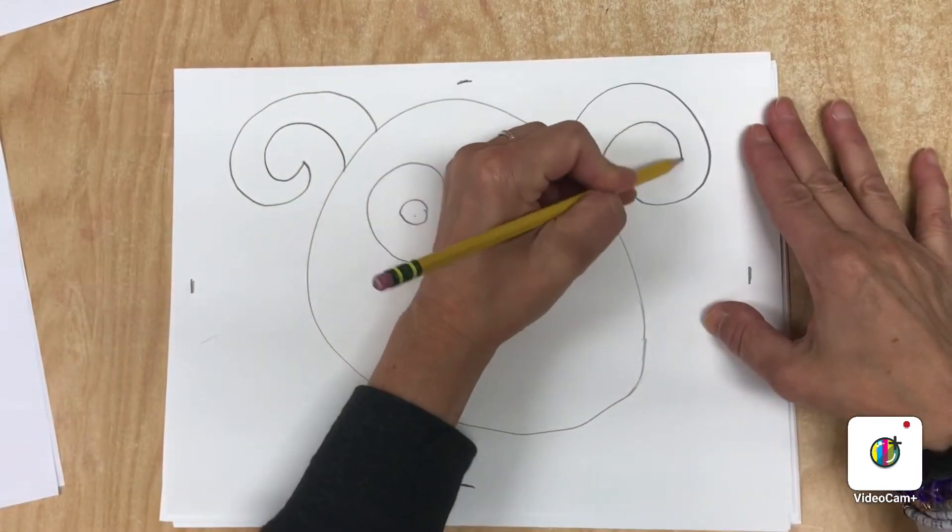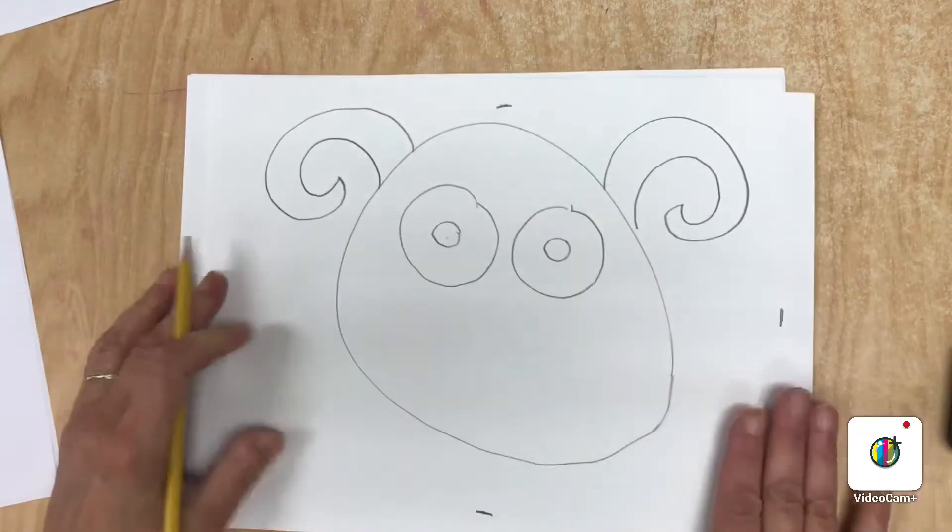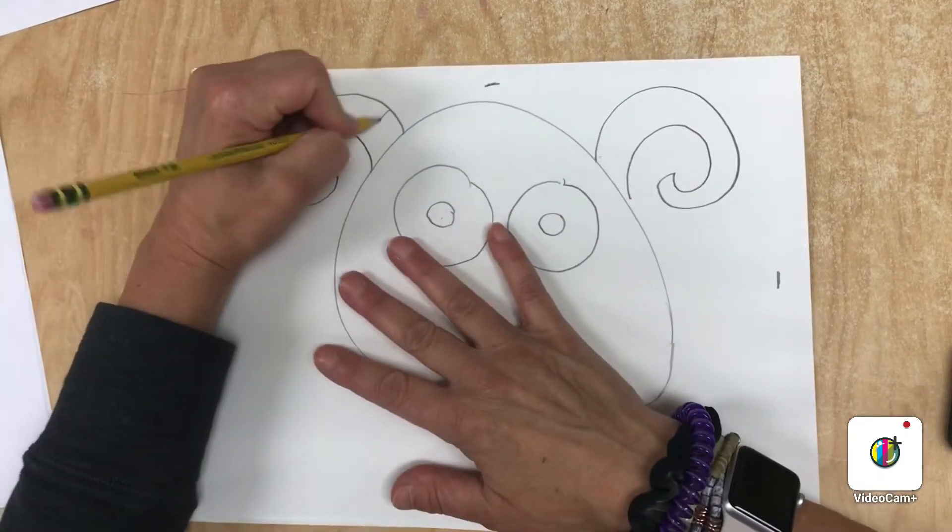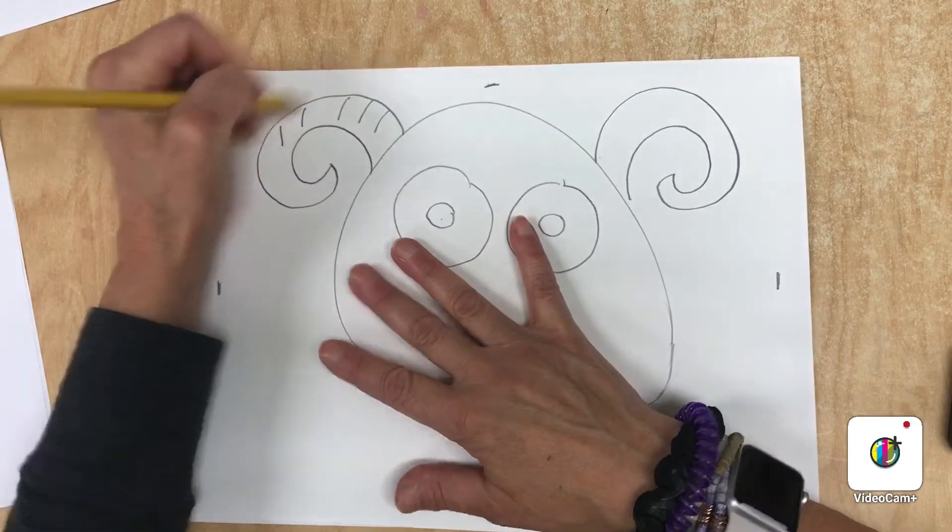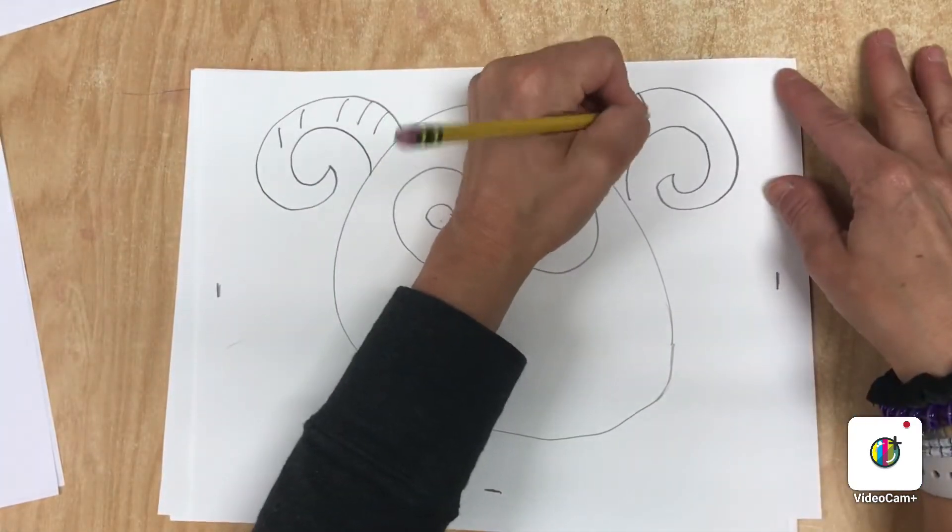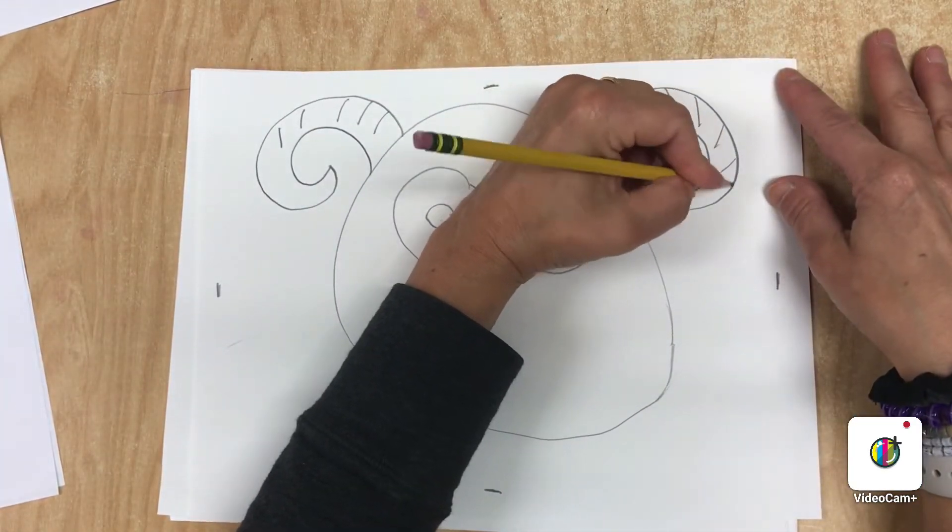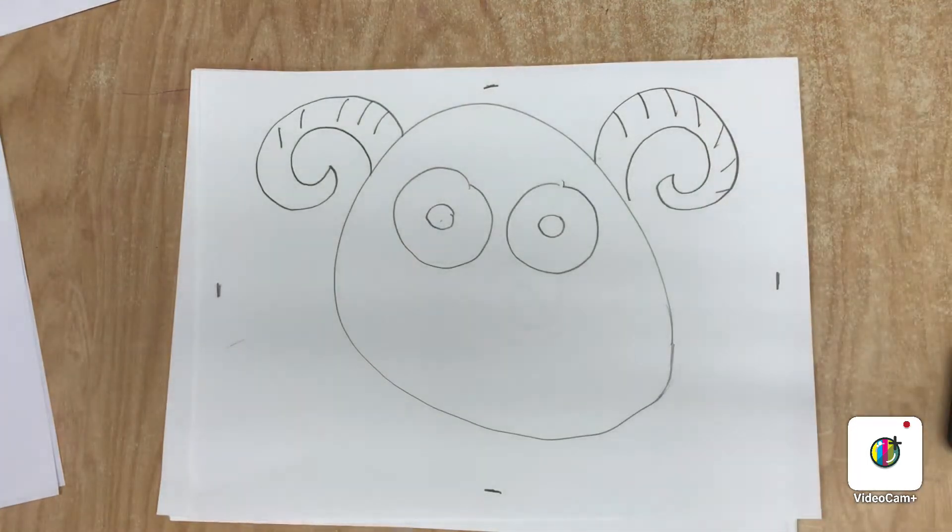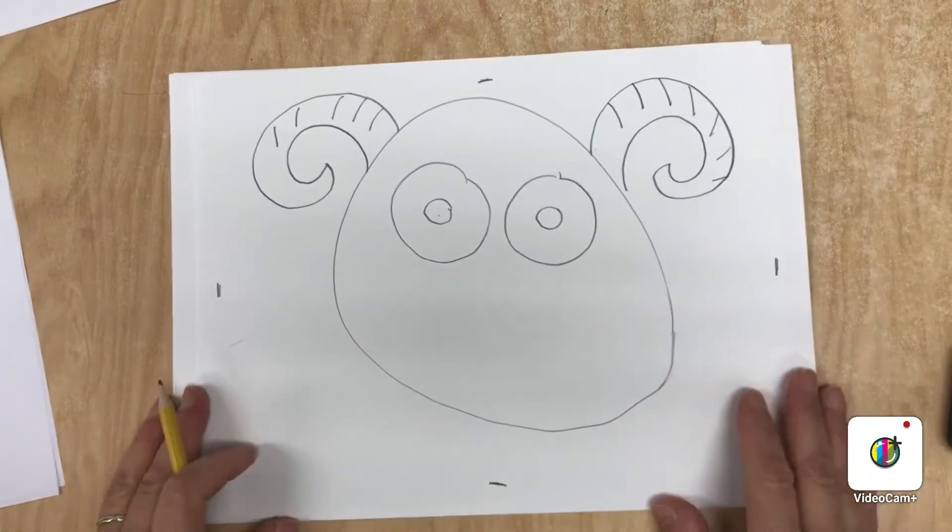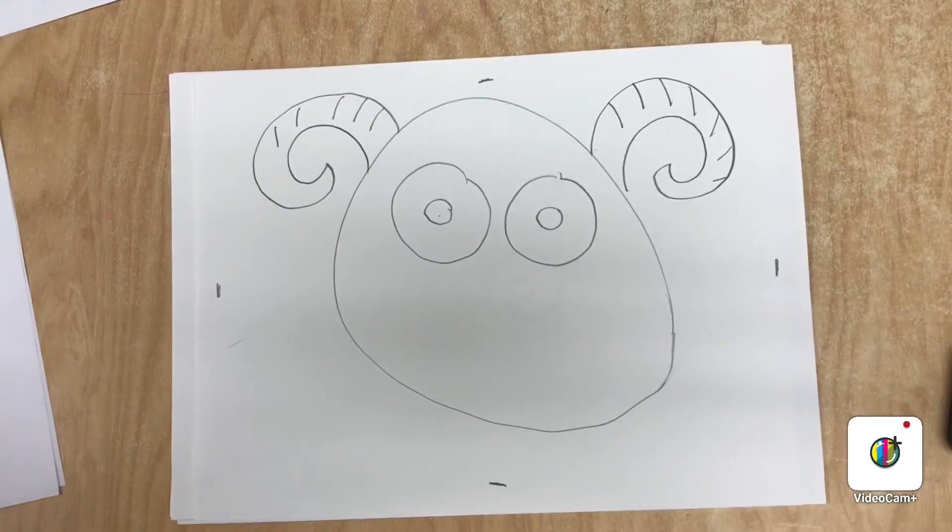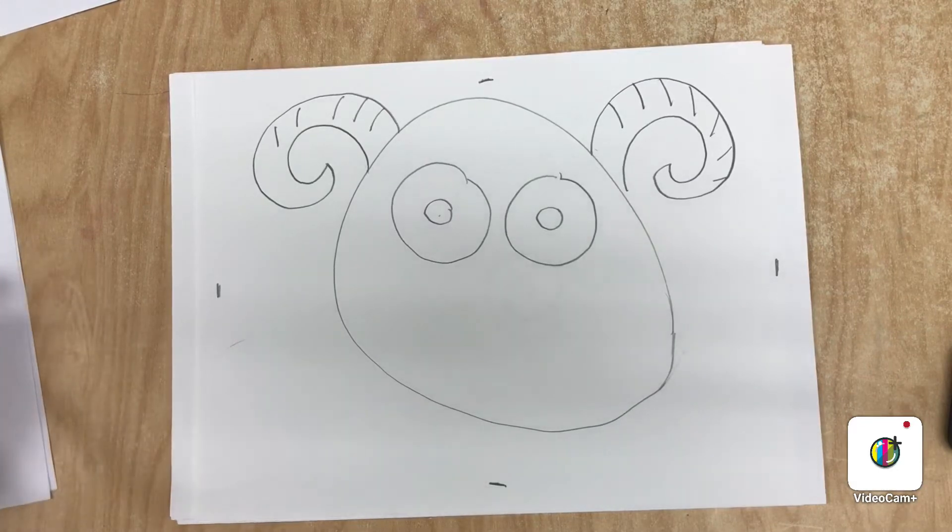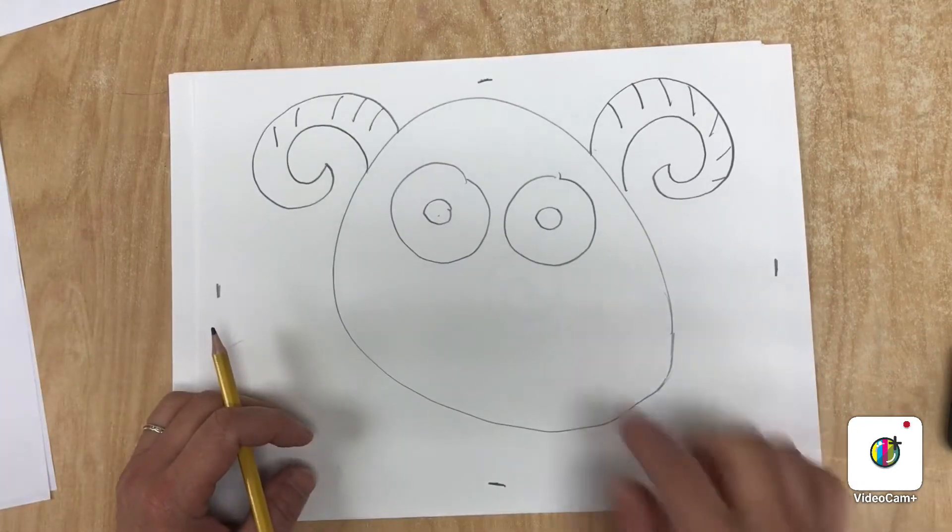Now if I want to make texture in the horns, I can just make some lines. It would look rough and bumpy, just like when we drew the pumpkin. The pumpkin had lines because the pumpkin was bumpy. Now do you want a nose or do you want no nose? That's up to you. I think I'm not going to put a nose on this one.